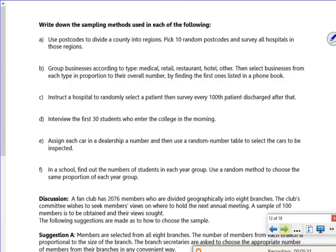So it says write down the sampling method for these. Let's have a look. So it says use postcodes to divide a country, county into regions, pick 10 random postcodes and survey all the hospitals in that region. So you're splitting it up into bits and then that one bit you're grabbing everybody. So that has to be cluster.